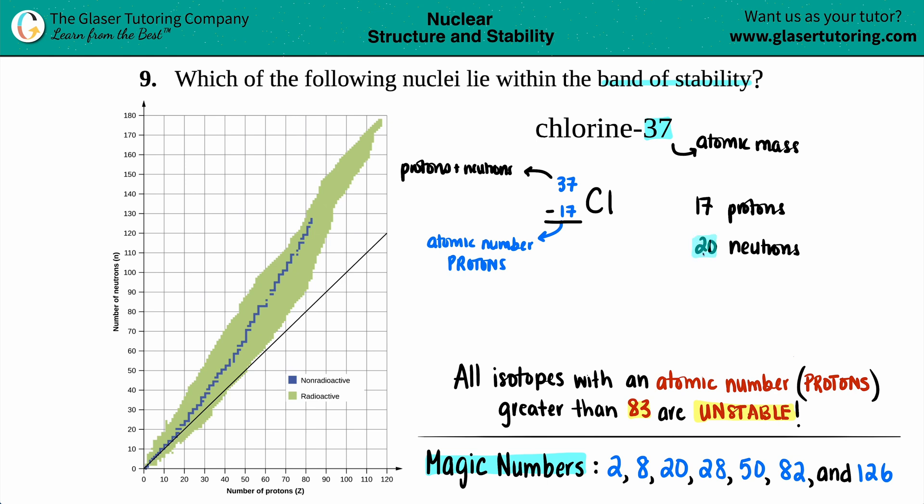In this case I see I have 20 neutrons and a magic number is 20. This is the max filled d orbital—that's why these are magic numbers, because they're completely filled. Since I have a 20, that's a really good sign. It's a magic number, so will this lie in the band of stability? Yes, it will. It is a stable isotope.